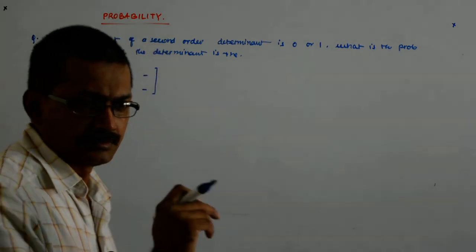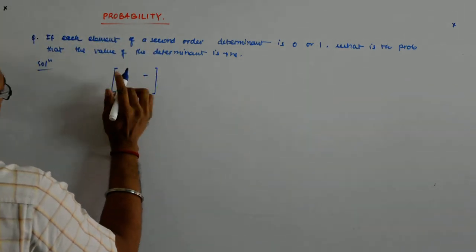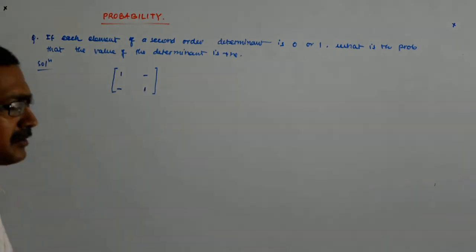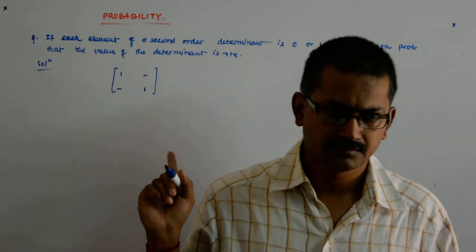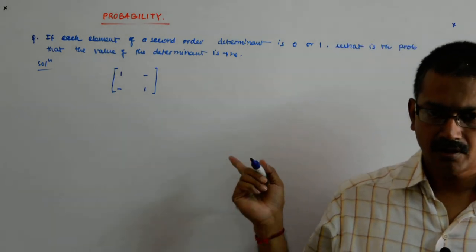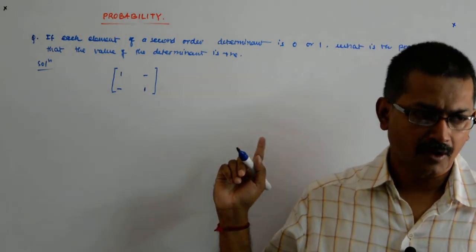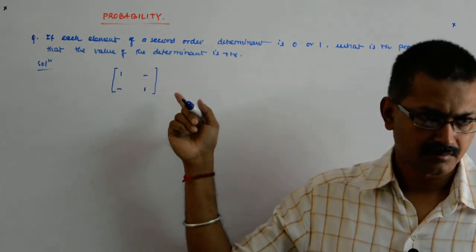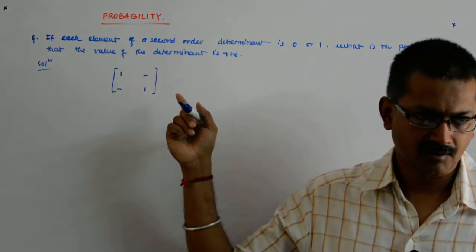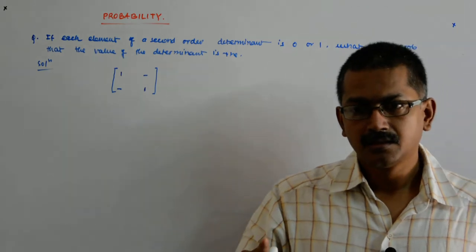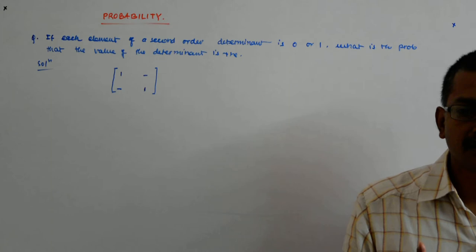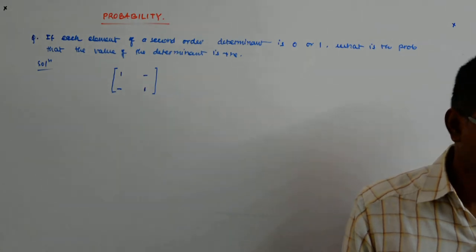No. See, it is this into this. So this has to become 1. For the determinant to be positive, this has to remain 1. Okay. And this multiplication has to remain 0. Correct.